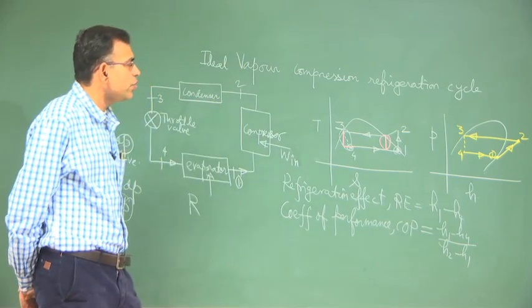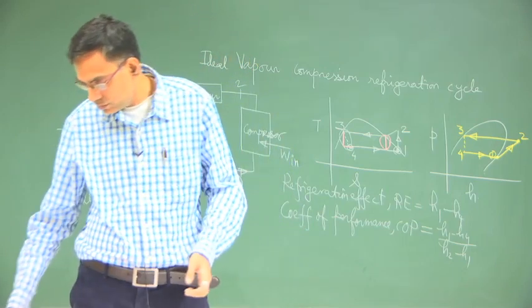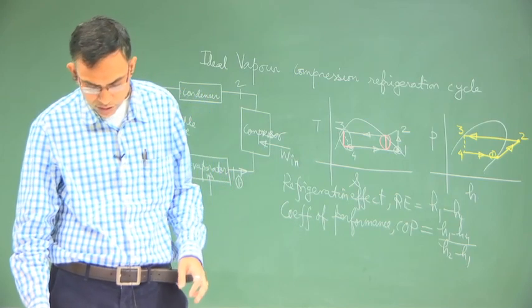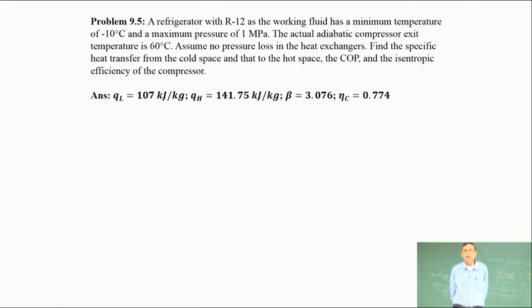With this introduction on the vapor compression refrigeration cycle, we will work out a problem. Problem 9.5 is the last problem of this chapter on thermodynamic cycles. A refrigerator with R12 as the working fluid has a minimum temperature of minus 10°C and a maximum pressure of 1 MPa. The actual adiabatic compressor exit temperature is 60°C. Assume no pressure loss in the heat exchangers. Find the specific heat transfer from the cold space, to the hot space, the COP, and the isentropic efficiency of the compressor.